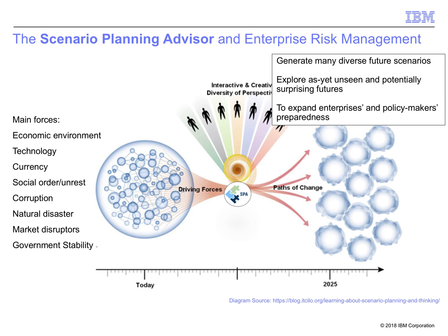One thing to note: rather than using statistical techniques, SPA uses AI planning. Even though a thing has never happened and there is no data from which to statistically project such a future, it still needs to be considered and possibly prepared for. Brexit comes to mind.